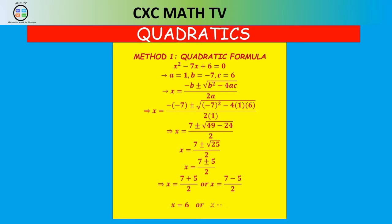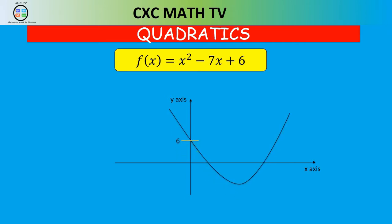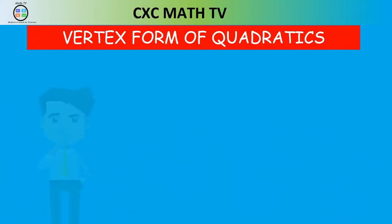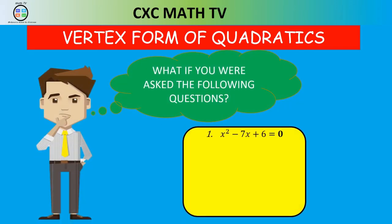Once we get x = 1 and x = 6, we sketch the graph of f(x) = x² - 7x + 6. The two roots are 1 and 6, and the y-intercept is 6, as displayed on the screen. Now, what if I asked you to: (1) solve the equation equal to 0, (2) solve x² - 7x + 6 > 0, and (3) solve the expression less than 0?